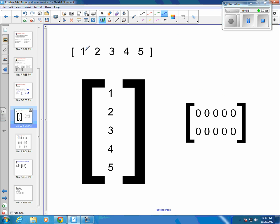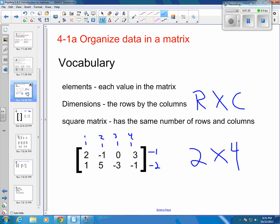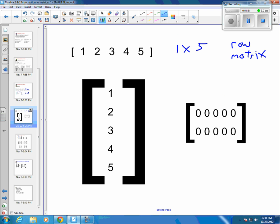Some other vocabulary. This is a 1 row by 1, 2, 3, 4, 5. Okay, so it's a 1 by 5. It is considered a row matrix because it consists of just 1 row. So let me go back. Did I cover everything over there? Oh, square matrix. I'll get to that in just a second.